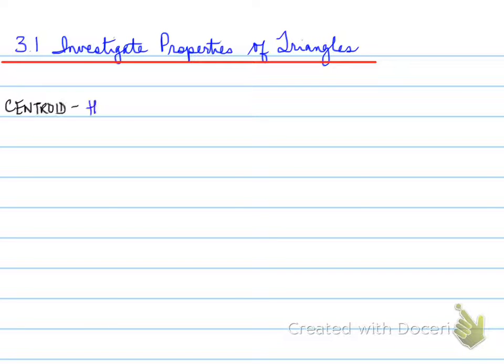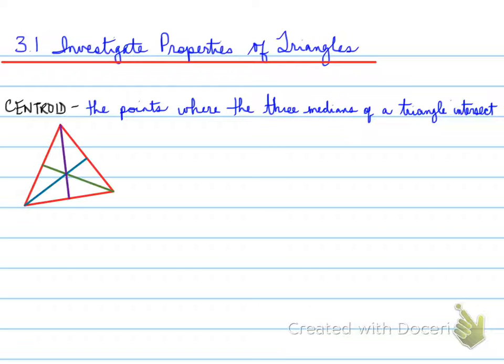A centroid is the point where the three medians of a triangle intersect. This particular point is known as the center balance of a triangle. The idea is you could balance your finger on a rotating triangle at the centroid. Now if you remember the idea of a median, you have a triangle,